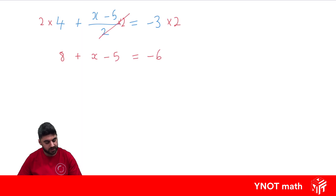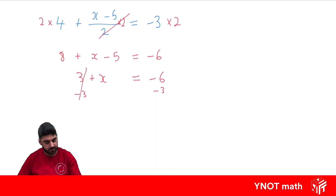We have like terms on the same side, so 8 minus 5 gives us 3 plus x equals minus 6. Subtracting 3 from both sides: 3 minus 3 is 0, so x equals minus 6 minus 3, which is minus 9.